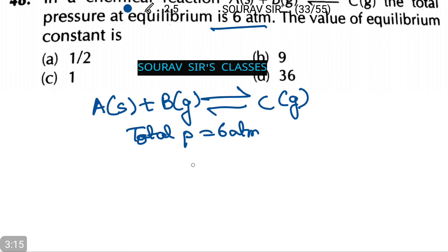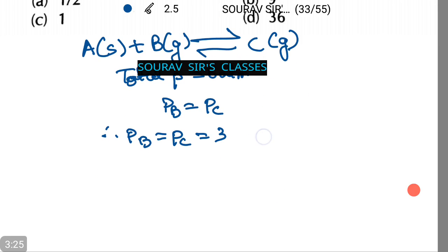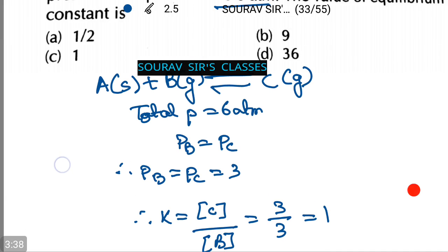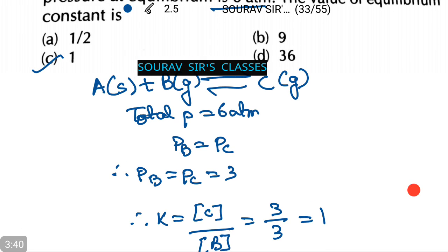Now, P_B equals P_C. Therefore, P_B equals P_C equals 3. Therefore, K equals [C]/[A] equals 3/3 which equals 1. That is option number C in our question.